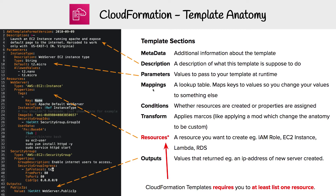Then you have mappings, which is like a lookup table — it maps keys to values so you can change your values to something else. A good example would be if you have a region, and for each region the image ID string is different, you'd have the region keys map to different image IDs based on the region.